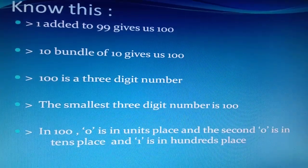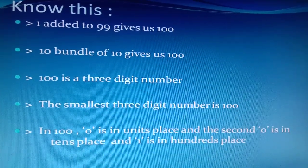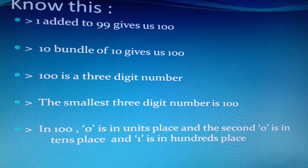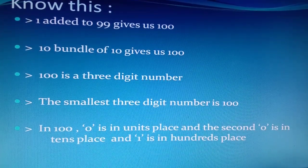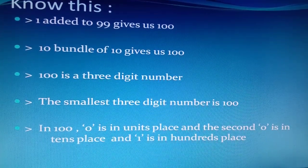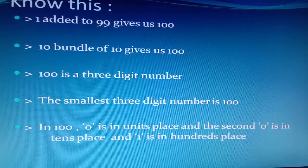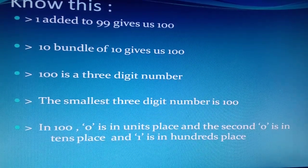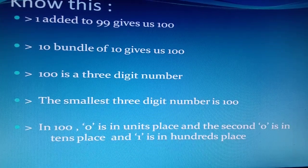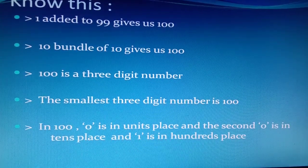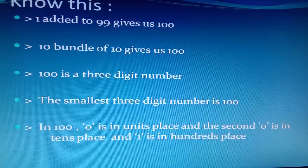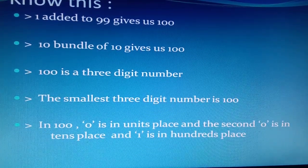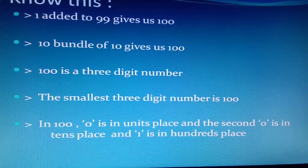Now know this: 1 added to 99 gives us 100. 10 bundles of 10 gives us 100. 100 is a three digit number. The smallest three digit number is 100. In 100, 0 is in the units place, the second zero is in the tens place, and 1 is in the hundreds place.